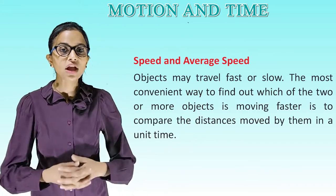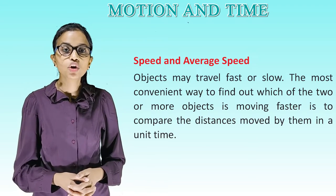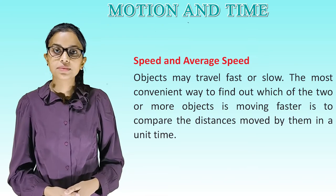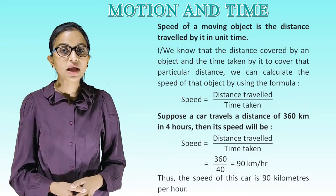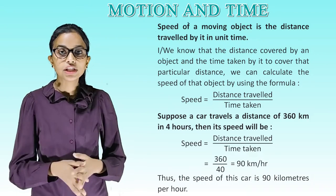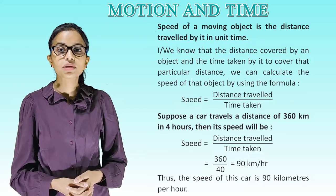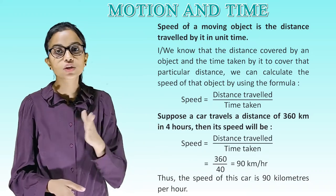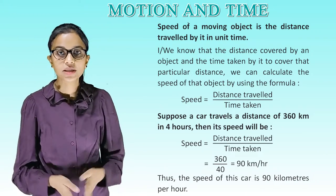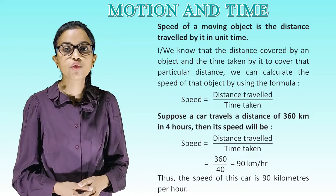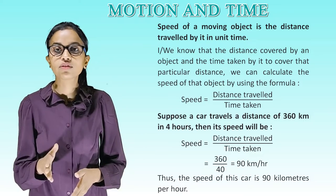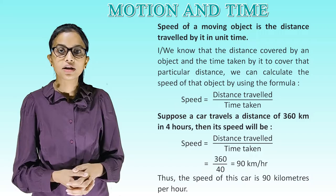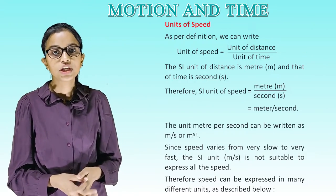Speed and average speed. Objects may travel fast or slow. The most convenient way to find out which of the two or more objects is moving faster is to compare the distances moved by them in a unit time. Speed of a moving object is the distance traveled by it in a unit time. If we know the distance covered by an object and the time taken by it to cover that particular distance, we can calculate the speed of that object by using the formula: speed equals distance traveled divided by time taken. Suppose a car travels a distance of 360 km in 4 hours, then its speed will be 360 divided by 4 equals 90 km per hour. Thus, the speed of this car is 90 km per hour.